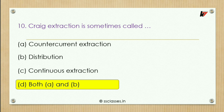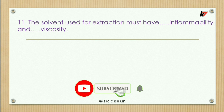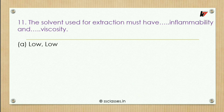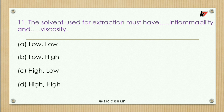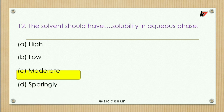Eleventh question: the solvent used for extraction must have what type of inflammability and viscosity? Options respectively: low and low, low and high, high and low, or high and high. The correct option is low and low — that is, low inflammability and low viscosity. Twelfth question: the solvent should have what type of solubility in aqueous phase? Options: high, low, moderate, or sparingly. The correct answer is low solubility in aqueous phase.